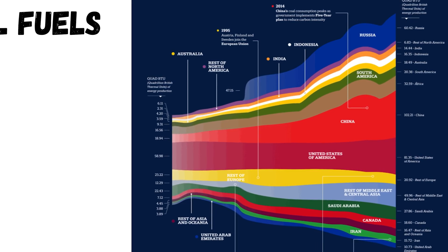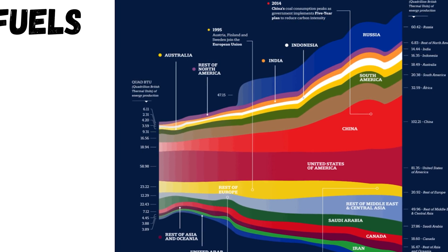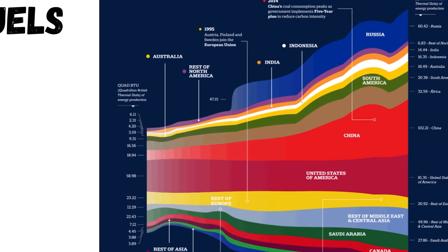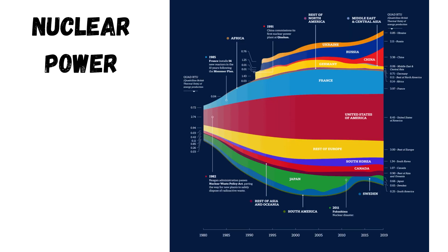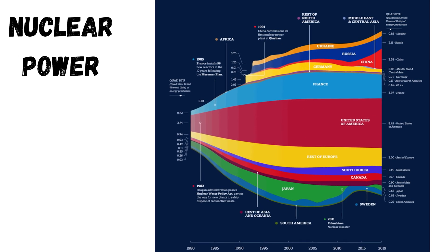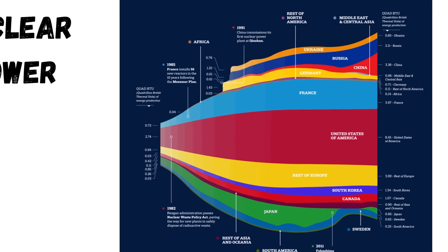However, it's worth noting that China's fossil fuel consumption and production have dipped in recent years, ever since the government launched a five-year plan back in 2014 to help reduce carbon emissions. The US is the world's largest producer of nuclear power by far, generating about double the amount of nuclear energy as France, the second-largest producer. While nuclear power provides a carbon-free alternative to fossil fuels, the nuclear disaster in Fukushima caused many countries to move away from the energy source, which is why global use has dipped in recent years.